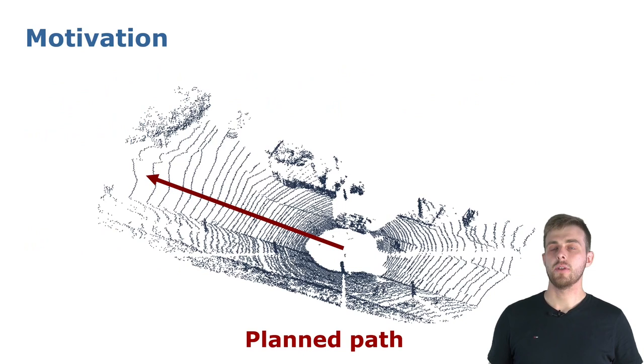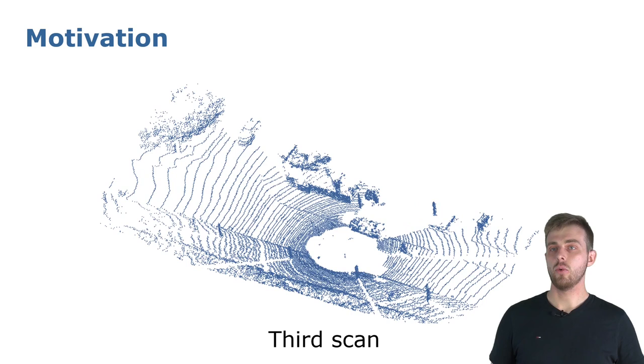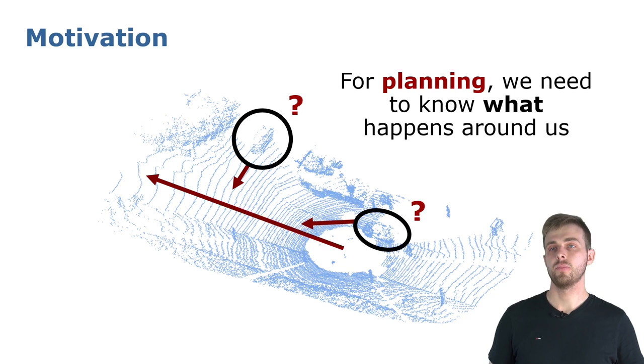Imagine a self-driving car that navigates in an unknown environment. We try to follow a planned path shown in red and sense the environment with a rotating 3D LiDAR scanner. With rotation of the scanner, we obtain a 3D point cloud that represents our environment at that time.